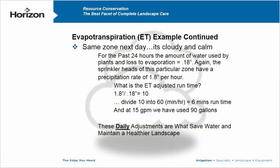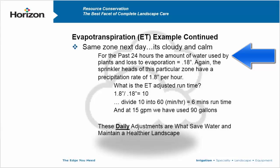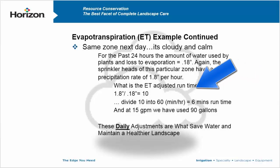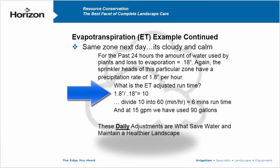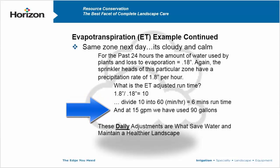Tomorrow, exactly the same system — but over the past 24 hours, the evaporation on that same system is now 0.18 instead of 0.3. The zone still puts down water at 1.8 inches per hour. So you take 1.8 divided by 0.18, which gives you a value of 10. Divide that 10 into your 60 minutes and now you've got a six-minute runtime instead of that 10-minute runtime. Yesterday the system used 150 gallons; with a smart controller today, it's going to use 90.